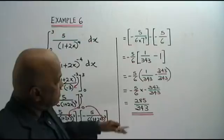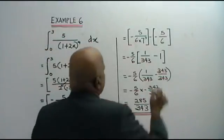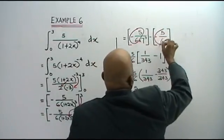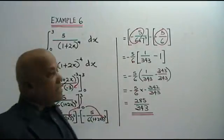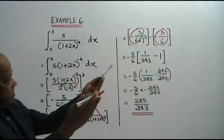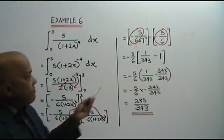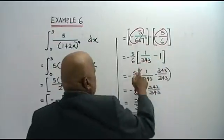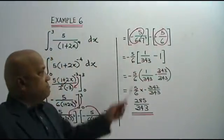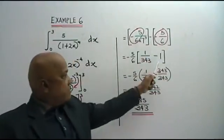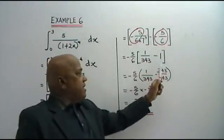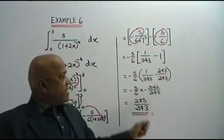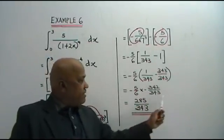From this step onwards, you look at the common factor, which is negative 5 over 6. Take out negative 5 over 6. So what you have left is 1 over 7 cubed. 7 cubed is 343. Minus 1. What is 1? That is 343 over 343. So 1 over 343 minus 343 over 343 gives negative 342 over 343.